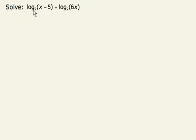To solve a logarithmic equation where both logs have the same base, log base 7 and log base 7, we just note that log base 7 of x minus 5 is equal to log base 7 of 6x, if and only if x minus 5 is equal to 6x.